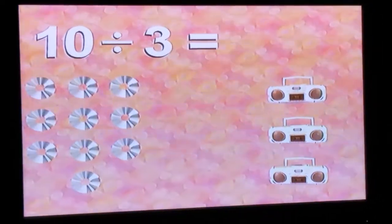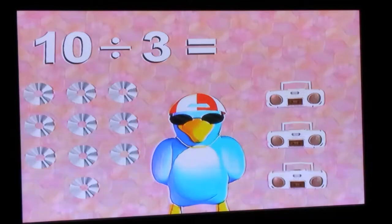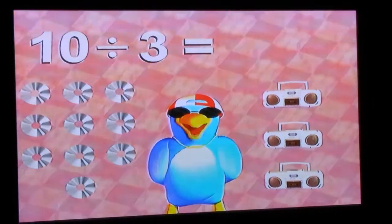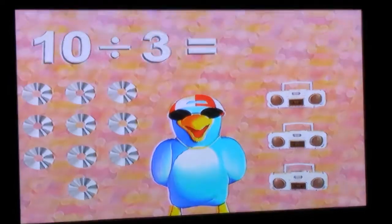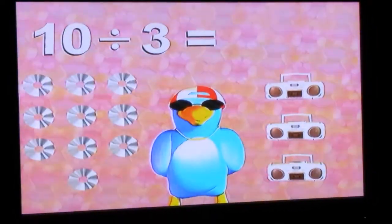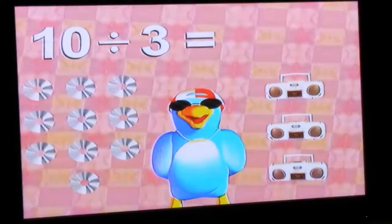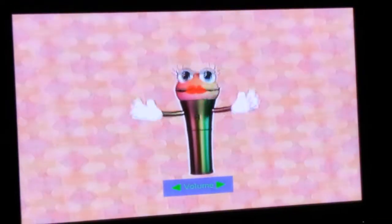Let's do another one. Ten divided by three is, well, let's think. There is no whole number times three that will equal ten, but three times three equals nine, and nine is just one less than ten. So if we divide ten by three, the quotient is three with a remainder of one.